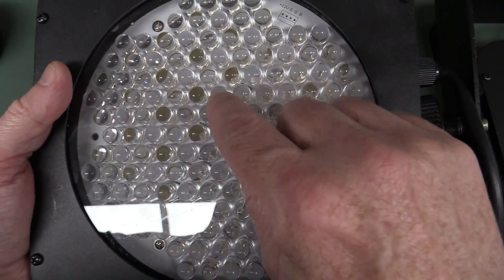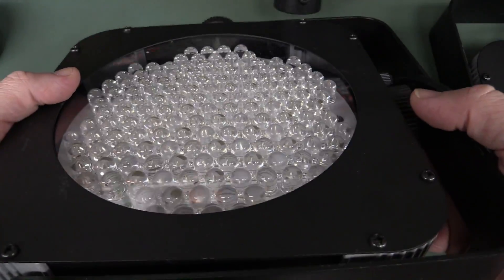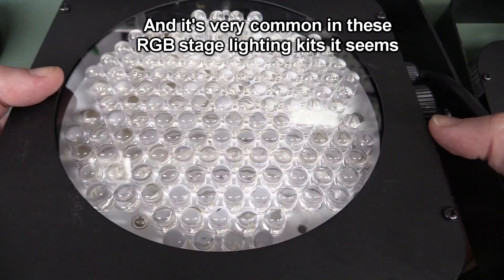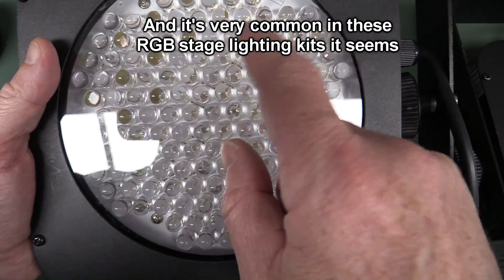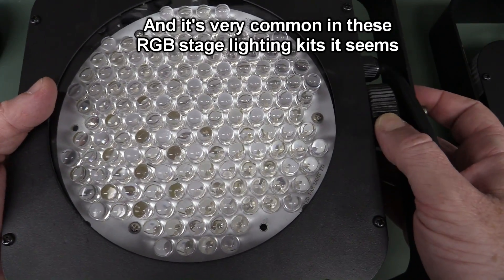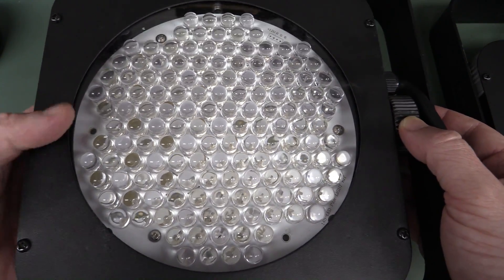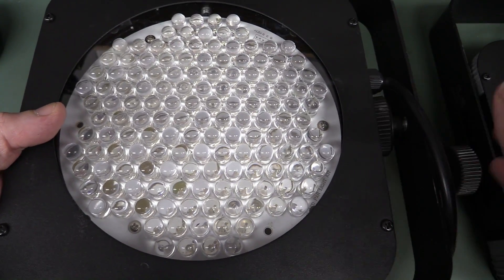Some of these LEDs in here, they look different to some of the others. So it's really unusual. This is supposed to be like a full RGB matrix, but when I look down there some of them, like that one is different to all the other ones around it. It's almost if it was like a different colored LED in there.